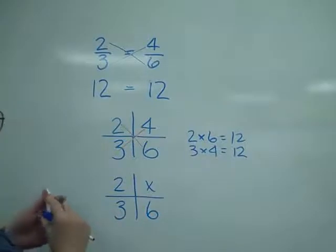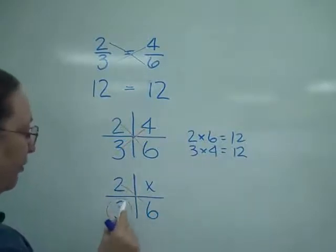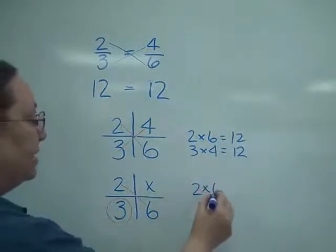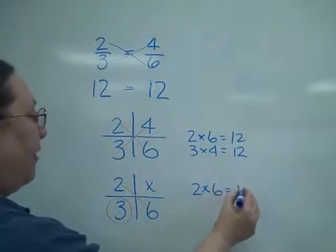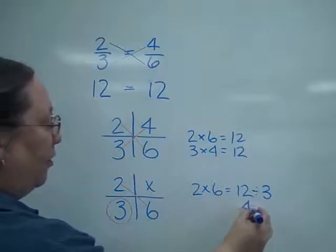Now notice here, I would multiply the 2 times 6, and then I will have to divide by the 3. So 2 times 6 is my 12, and then divided by 3 ends up with the 4.